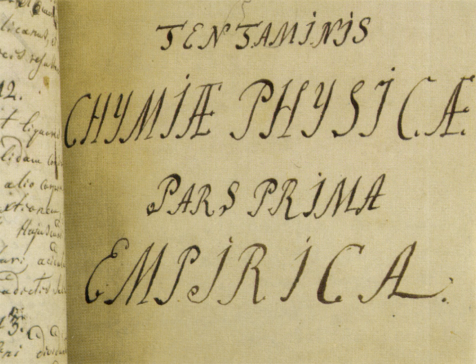One milestone was the publication in 1876 by Josiah Willard Gibbs of his paper 'On the Equilibrium of Heterogeneous Substances.' This paper introduced several of the cornerstones of physical chemistry, such as Gibbs energy, chemical potentials, and Gibbs phase rule. The first scientific journal specifically in the field was the German journal Zeitschrift für Physikalische Chemie, founded in 1887 by Wilhelm Ostwald and Jacobus Henrikus van't Hoff. Together with Svante August Arrhenius, these were the leading figures in physical chemistry in the late 19th and early 20th century, and all three were awarded the Nobel Prize in Chemistry between 1901 and 1909. Developments in the following decades include the application of statistical mechanics to chemical systems and work on colloids and surface chemistry, where Irving Langmuir made many contributions.